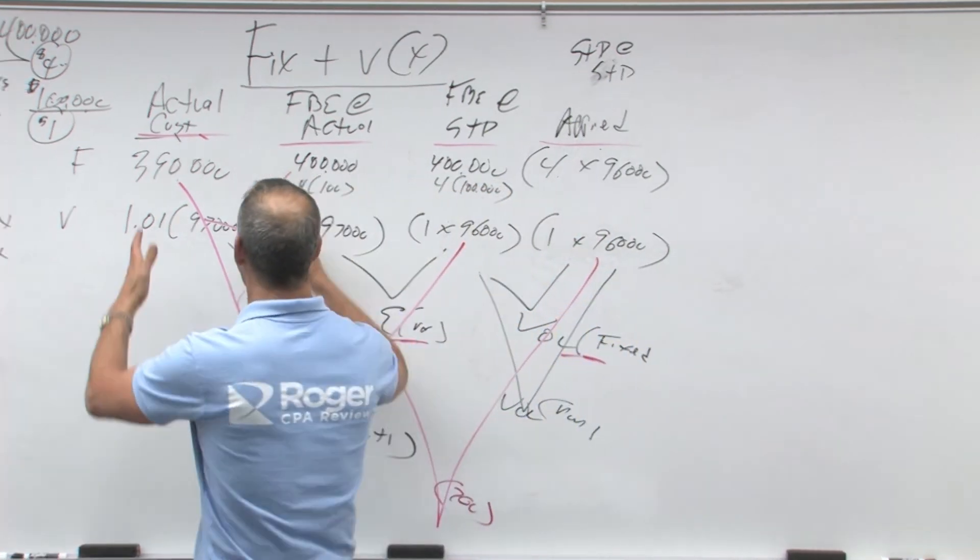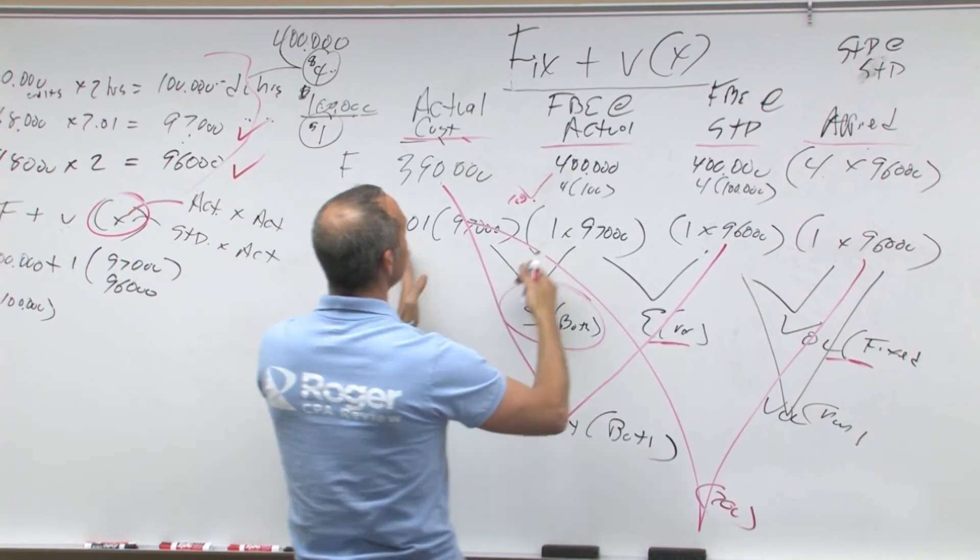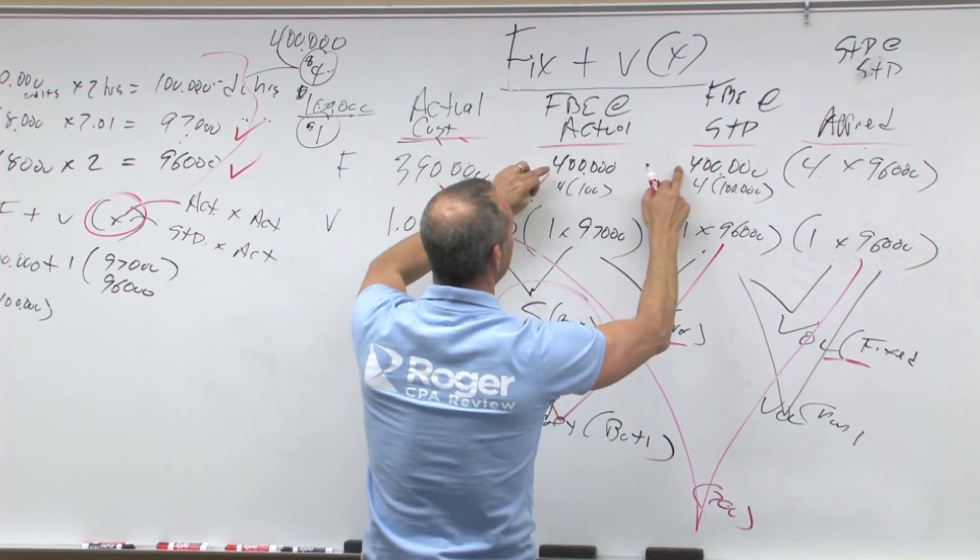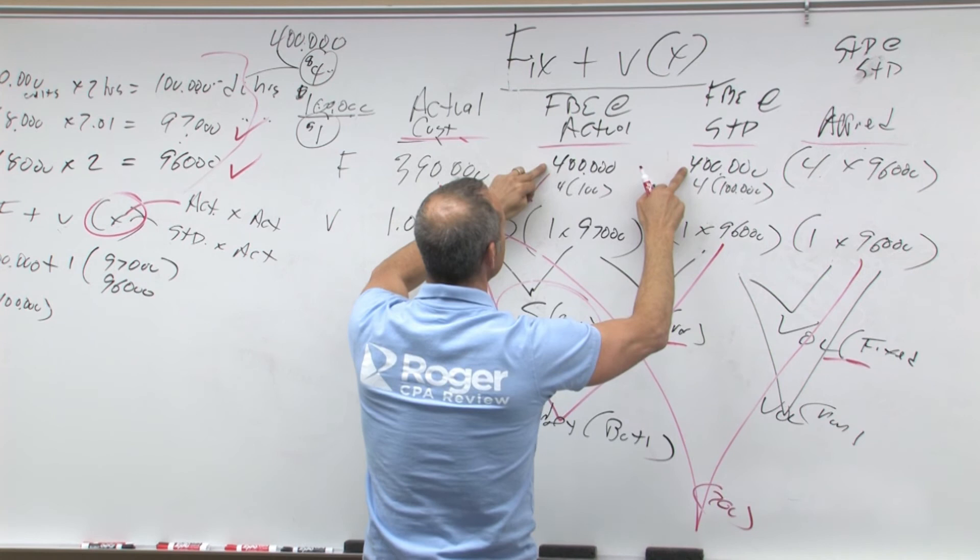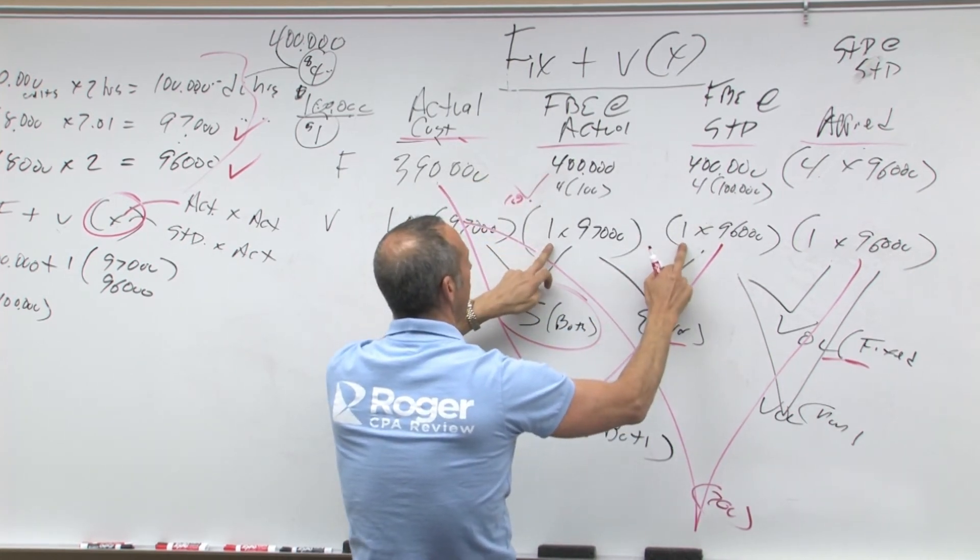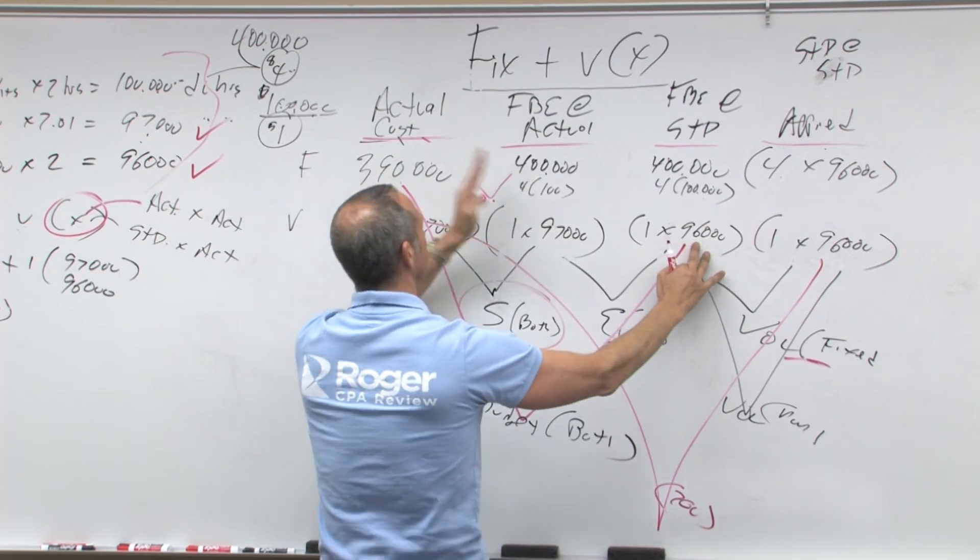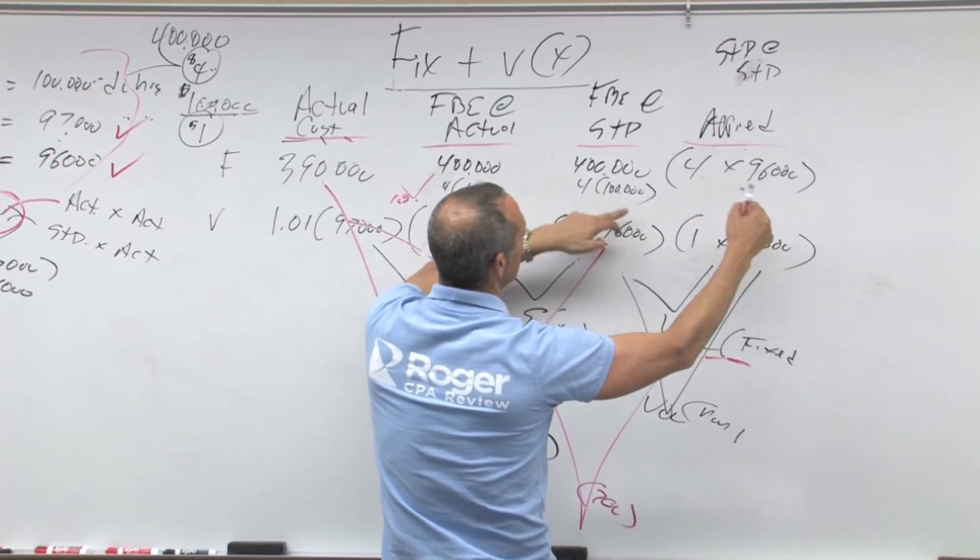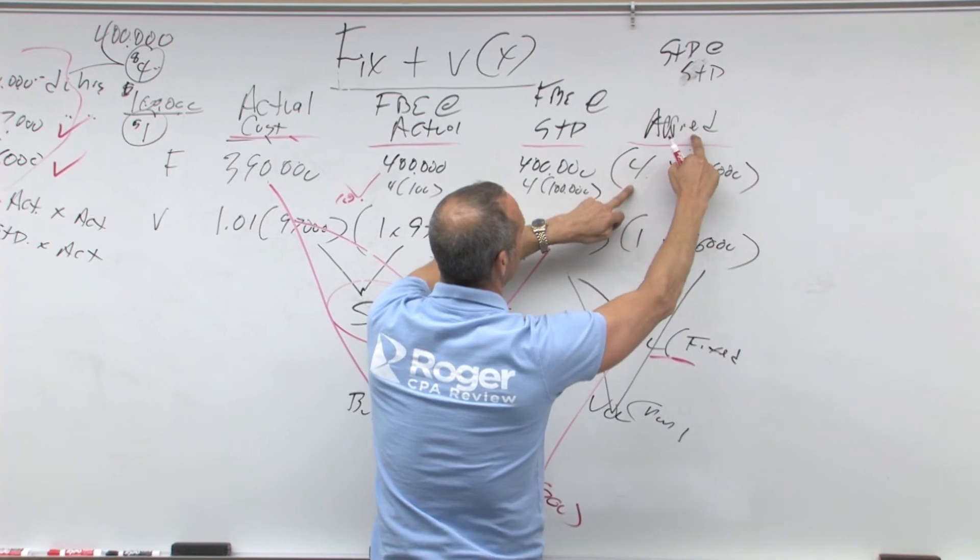So back up here, we've got actual, start here because it's given. You've got flexible budget, that's whatever your budget was, $400,000. You've got fixed plus variable. Notice this is the budgeted dollar, but this is close to actual, this is close to standard. This is your applied.